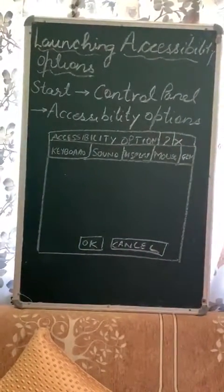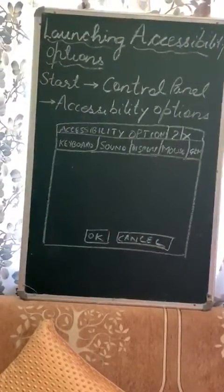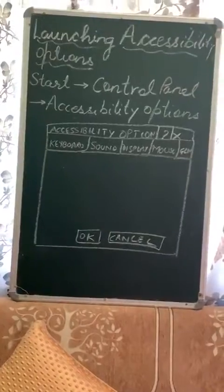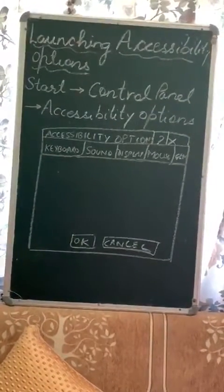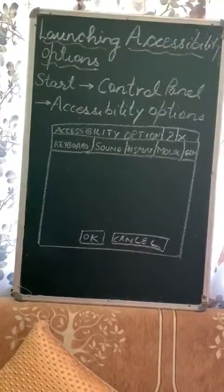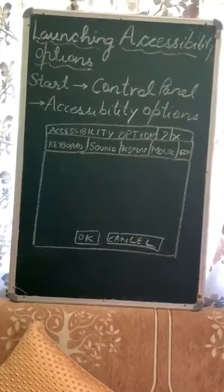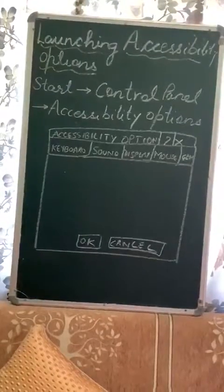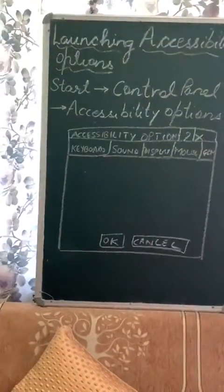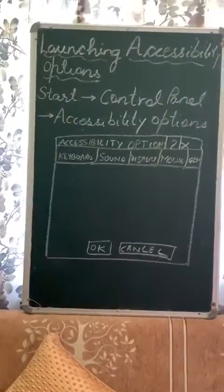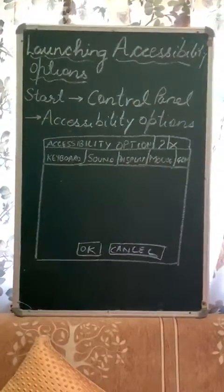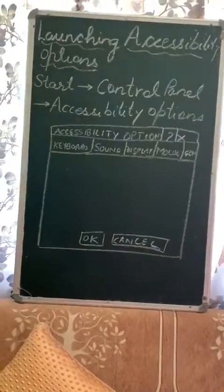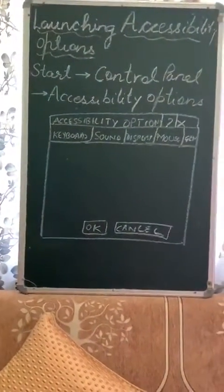In this dialog box, as you can see in the picture, there are five tabs: the Keyboard, the Sound, the Display, the Mouse, and the General tab. All these five tabs are basically designed for all the kinds of impairment that we have studied — that is, cognitive, motor, visual, and hearing impairment. I'll be briefing you about all these tabs, and in my later videos I'll be dealing with one tab at a time.